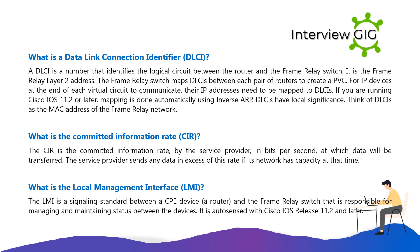What is a Data Link Connection Identifier (DLCI)? A DLCI is a number that identifies the logical circuit between the router and the frame relay switch — it is the Frame Relay Layer 2 address. The frame relay switch maps DLCIs between each pair of routers to create a PVC. For IP devices at the end of each virtual circuit, IP addresses need to be mapped to DLCIs. In Cisco IOS 11.2 or later, this mapping is done automatically using Inverse ARP. DLCIs have local significance — think of them as the MAC address of the frame relay network.